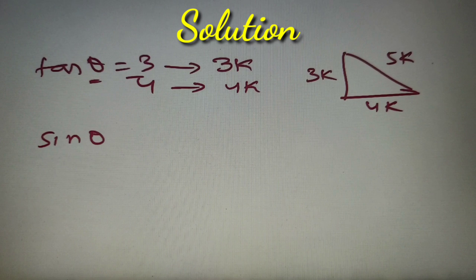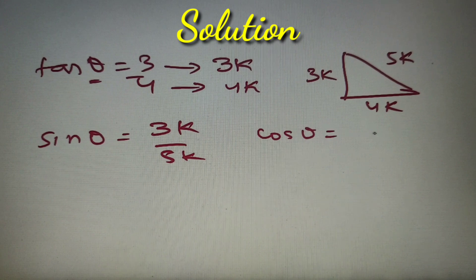Now the value of sin theta is basically perpendicular by hypotenuse, it is equal to 3k by 5k, and the value of cos theta is equal to base by hypotenuse, that is equal to 4k by 5k.